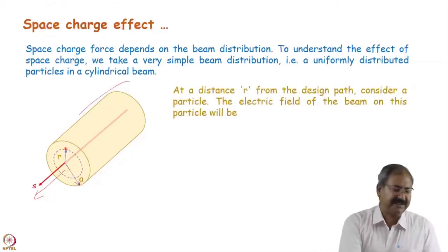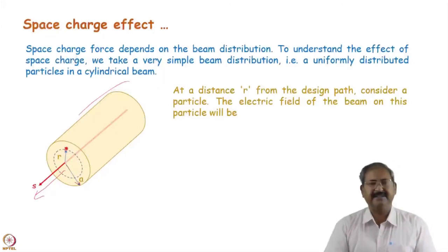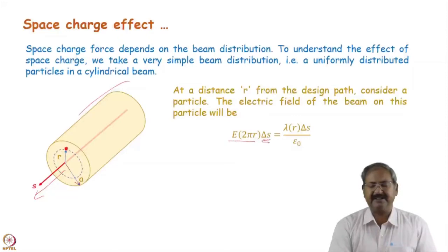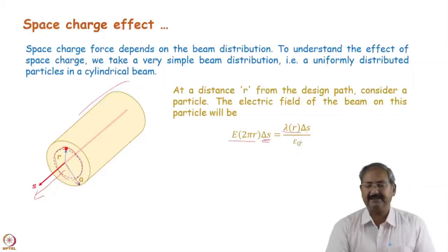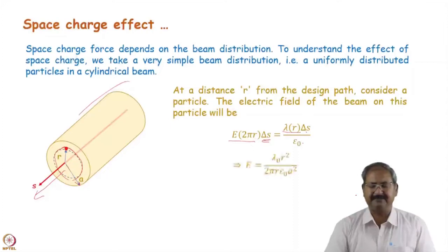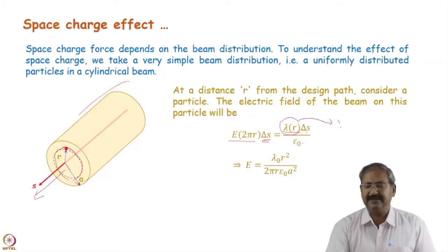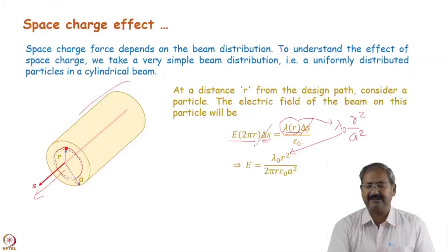We find the electric field on this particle using Gauss's law: E · 2πr · δs = λ_r · δs / ε₀, where λ_r is the linear charge density up to radius r. Substituting λ_r = λ₀ r² / a², we get E = λ₀ r / (2π ε₀ a²). The electric field is directly proportional to r and is directed radially outward.